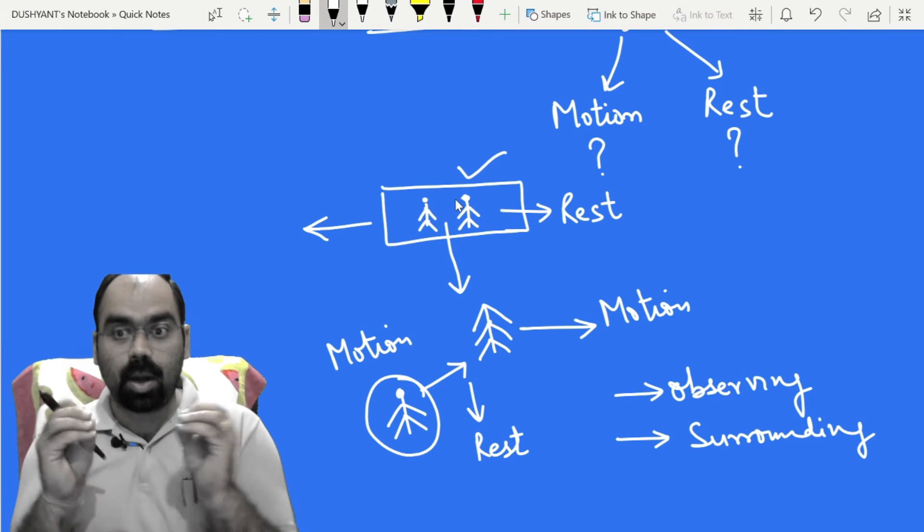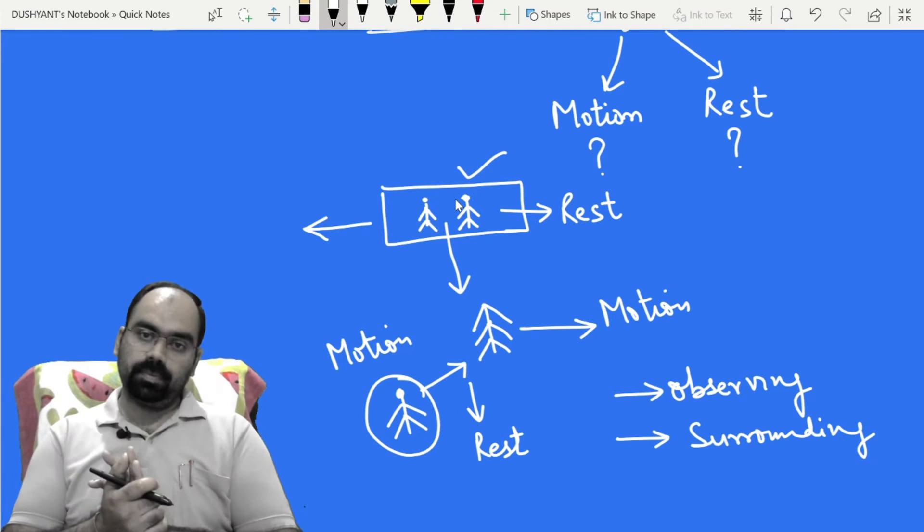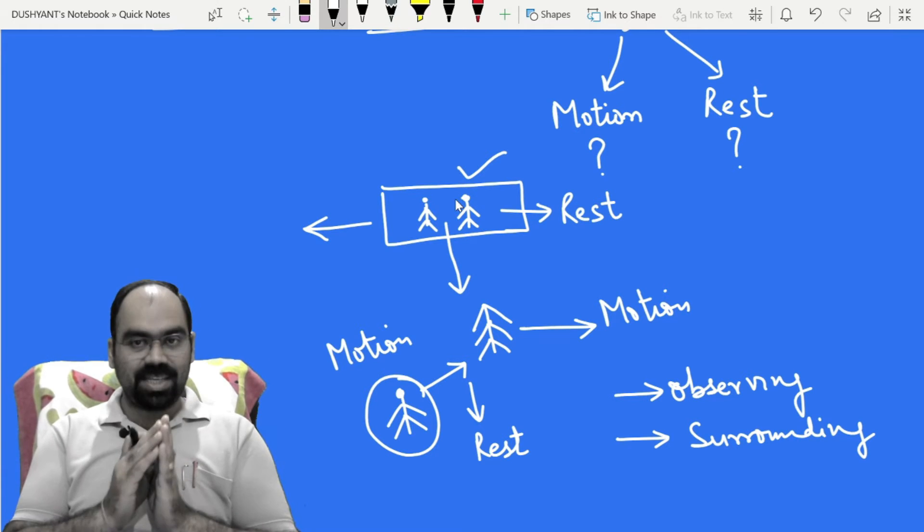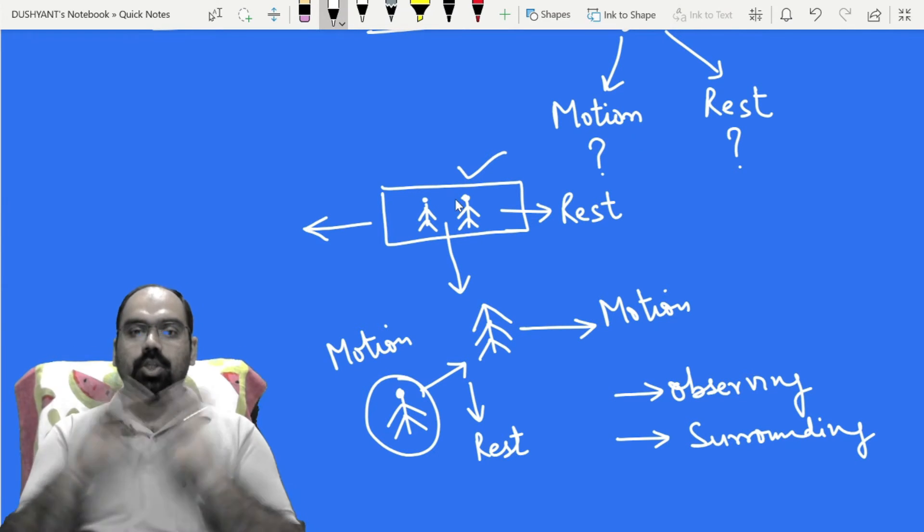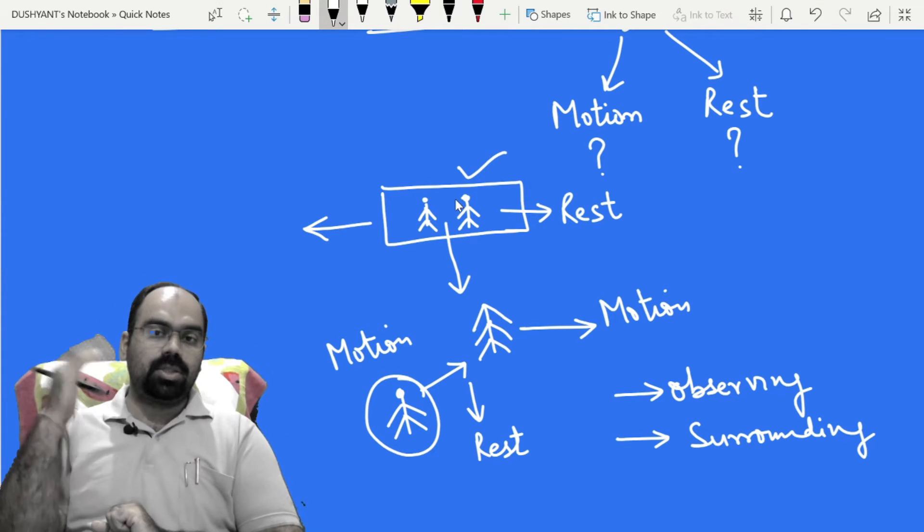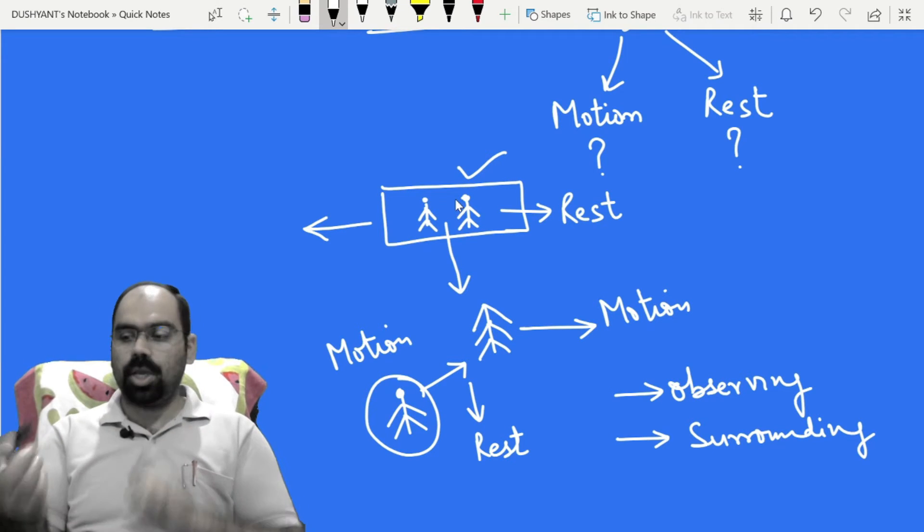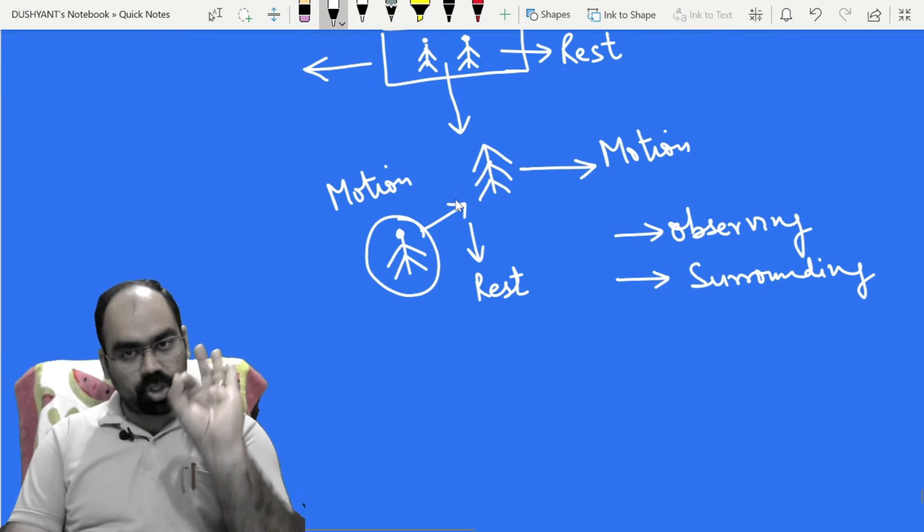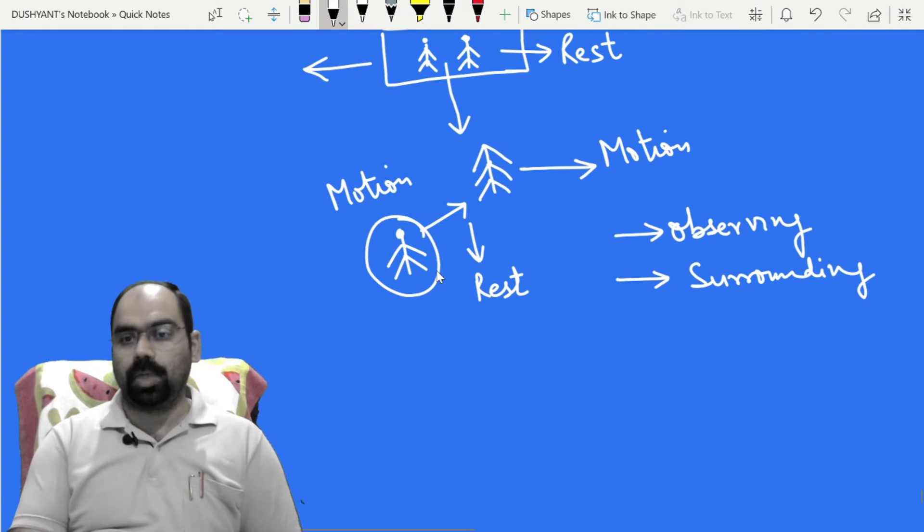Now what is the surrounding? For me as a layman, the surrounding is whatever is around you. Means if you are inside the bus, your co-passengers, your bus body, that is your surrounding. Or when you come outside the bus, the whole atmosphere, that is your surrounding. So as you change the surrounding, your prospect of looking at objects changes. So now how you will see motion or rest, that depends upon your surrounding. This surrounding, I give a name, what you are seeing, that is frame of reference.